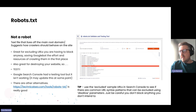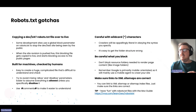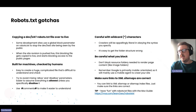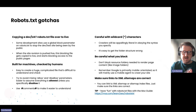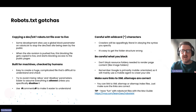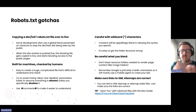Essentially, the main components of a robots.txt file should consist of the ability to include a sitemap, and the ability to allow and disallow particular subfolders or URLs that you don't want Google crawling and indexing.